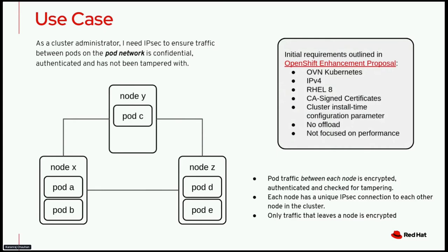The first requirement is that this has to be supported in OVN-Kubernetes. It requires support for IPv4; however, subsequently IPv6 support has been added. It has to work on RHEL 8, which was the version of RHEL the cluster was based on at that time. It needs support for CA-signed certificates. It's a cluster installation-time parameter, meaning you can enable this when deploying a cluster but not after the cluster has been deployed — though enabling it at runtime is something we'll look at at a later stage. Initially, we weren't focusing on performance or the ability to offload; we were focused on functionally getting this working and enabling the ability to encrypt traffic with IPSec in these clusters.